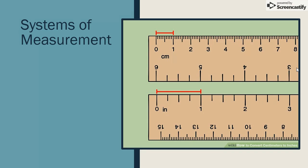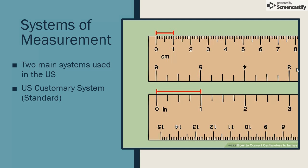There are two main systems of measurement used in the US, including the US customary system, also called the standard system, and the international or SI system, also referred to as the metric system.